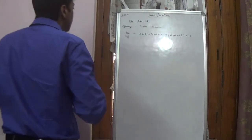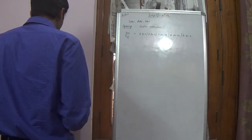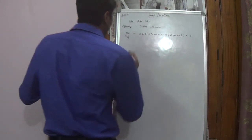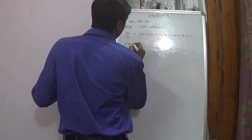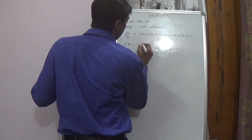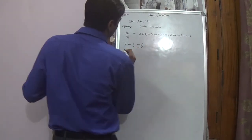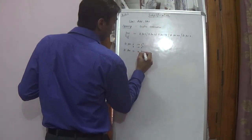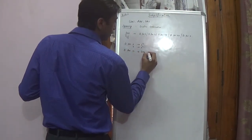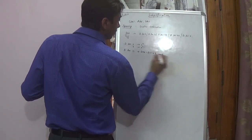Duplex for a single digit number is the square of that number. For example, duplex for 1 is 1 squared, and duplex for 2 is 2 squared. Duplex for a 2-digit number is 2ab — for example, 2 into 1 into 2, which is 4.